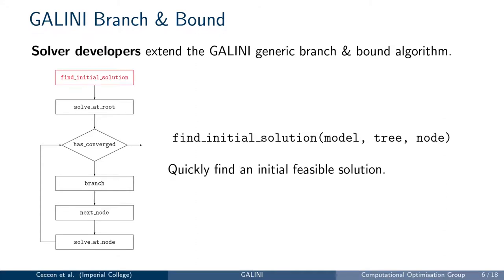The first method is a callback called before we solve the root node. This callback should find a feasible solution as quickly as possible. Having a feasible solution is very important because we can use this upper bound to fathom nodes and when performing bound tightening.